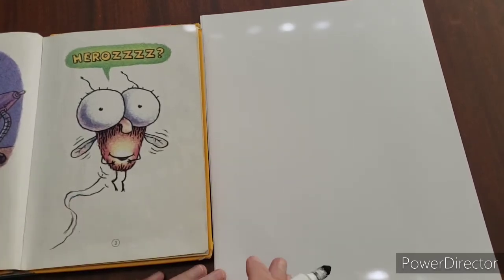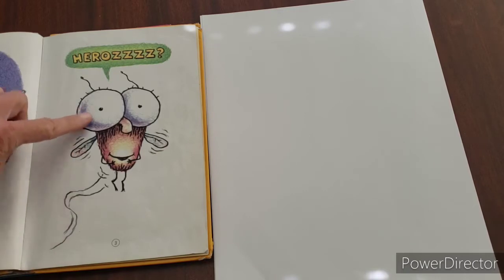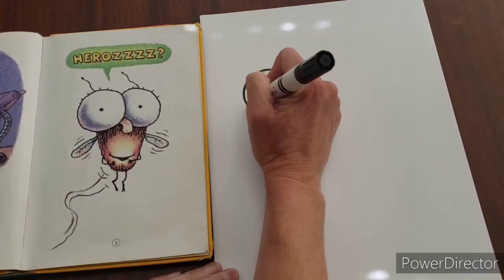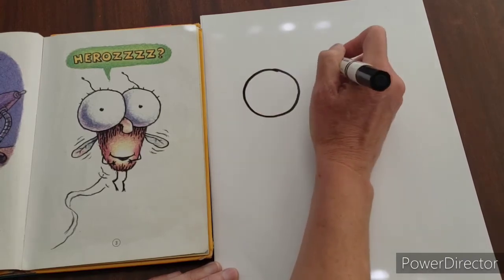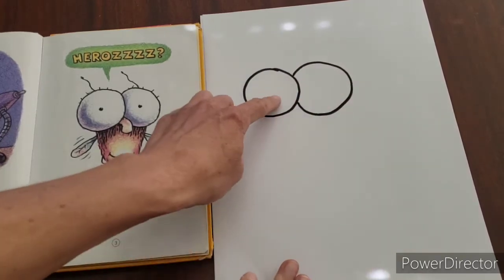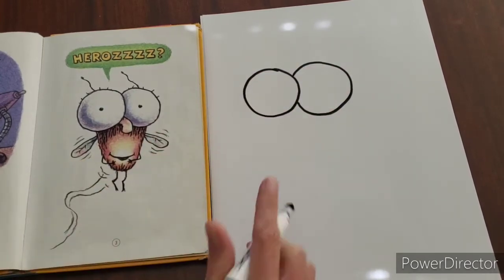Here we go. For Fly Guy, the most noticeable thing about him is these giant eyeballs. So let's make two giant eyeballs and they kind of overlap. They're not like two separate circles, they're kind of overlapping.